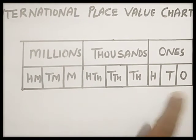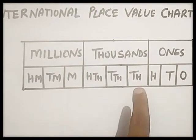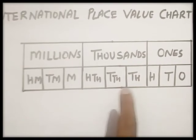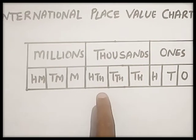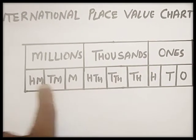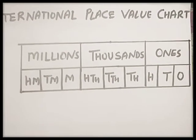Ones, tens, hundreds. Then thousands, ten thousands, hundred thousands. Then millions, ten millions, and hundred millions.